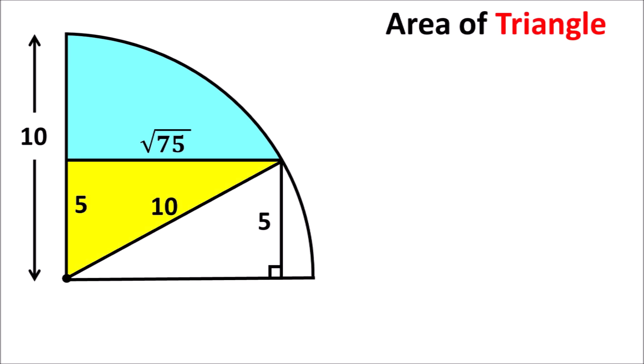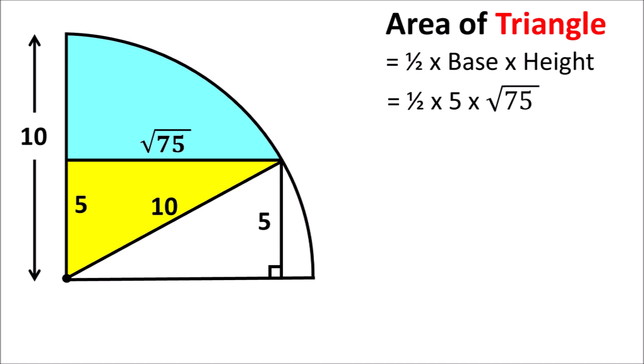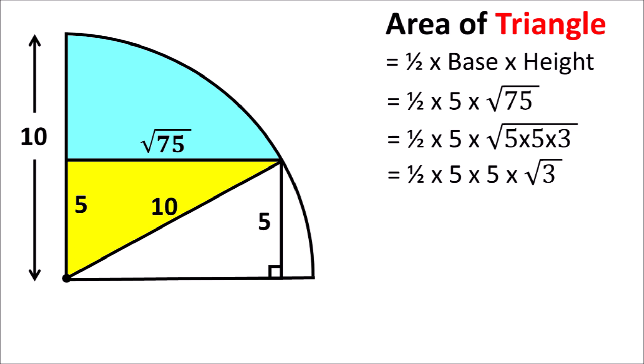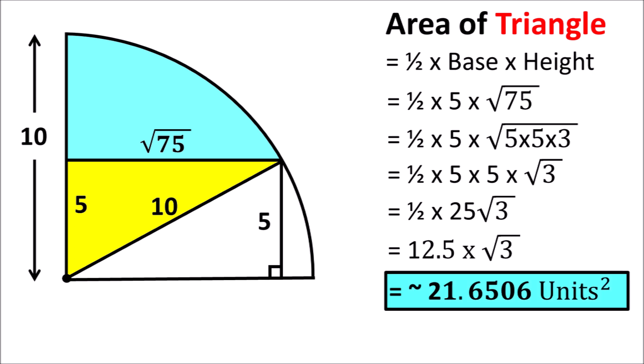Now we know all three sides of this yellow highlighted triangle. The area of this triangle equals one-half multiplied by base multiplied by height. The base is equal to 5, and the height is equal to the square root of 75. Root 75 equals 5 root 3, so the area equals one-half times 5 times 5 root 3, which equals 12.5 times root 3, approximately equal to 21.6506 square units.